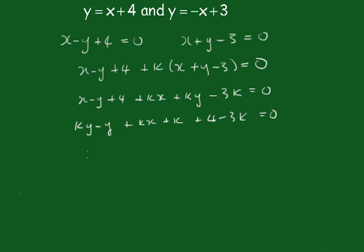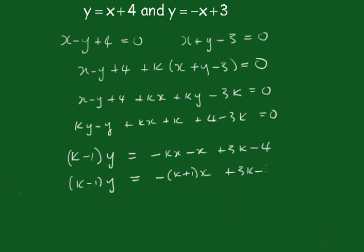Keeping the y's together, we'll have ky - y + kx + x and this is +4 - 3k = 0. So keeping the y's together, we get (k-1)y and this will be -kx - x + 3k - 4, and we'll have (k-1)y = -kx - x + 3k - 4, and then divide through by k - 1.